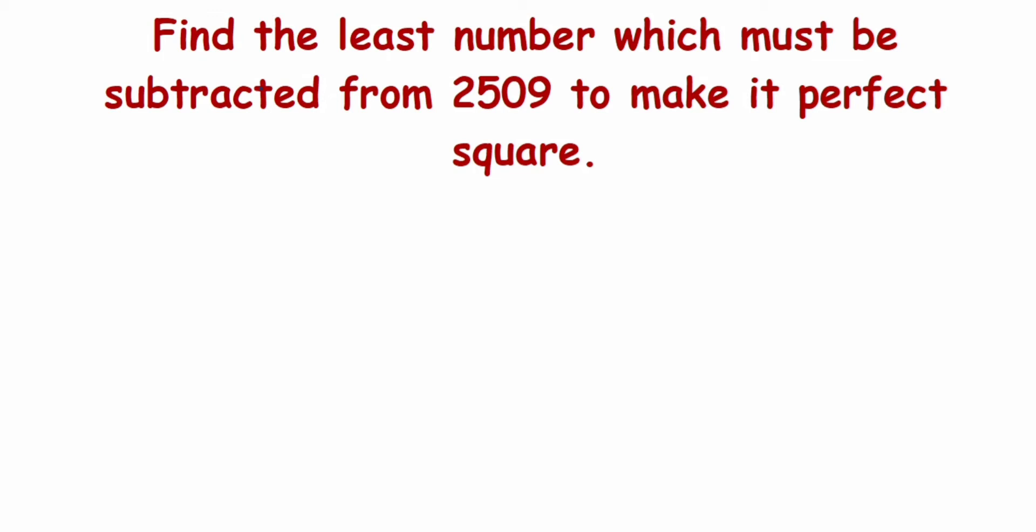We need to subtract a number from this to make it a perfect square. Such problems can be done by long division method. Let's see how we can solve it. We'll take this number inside the division.